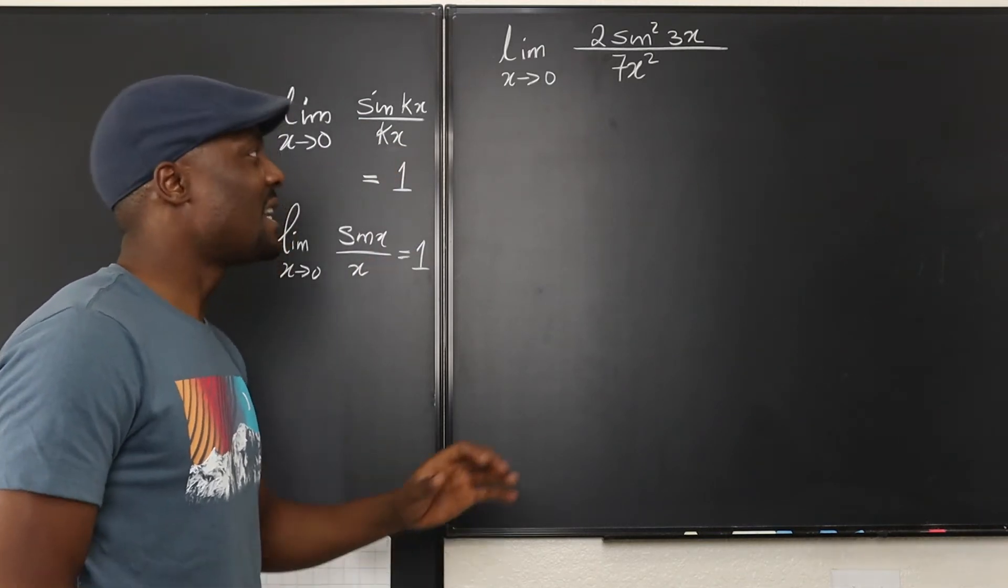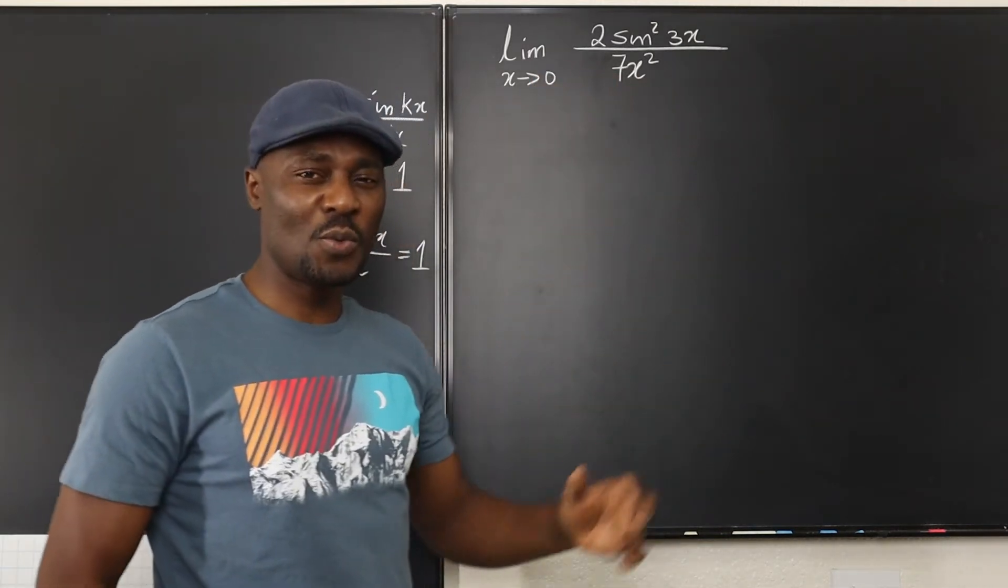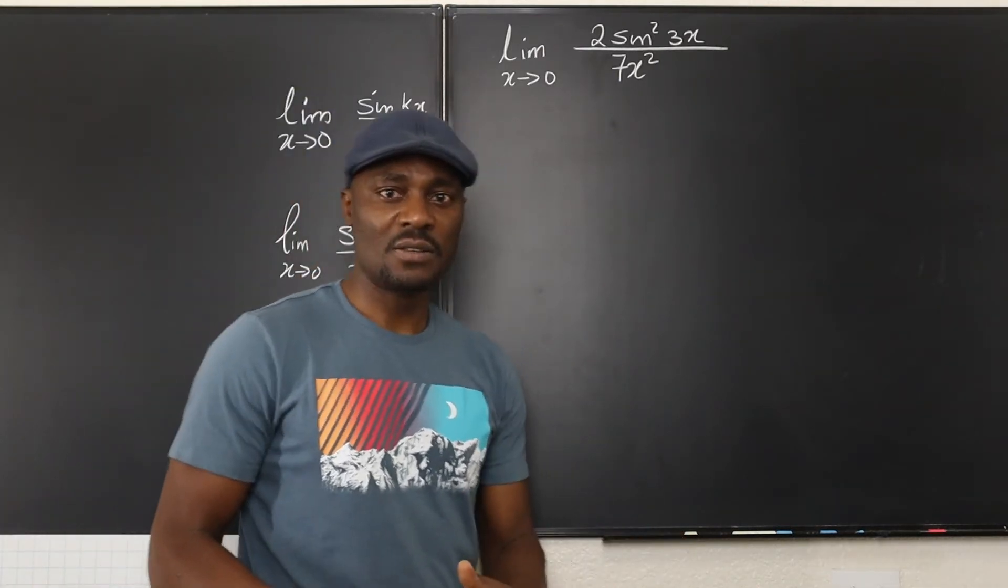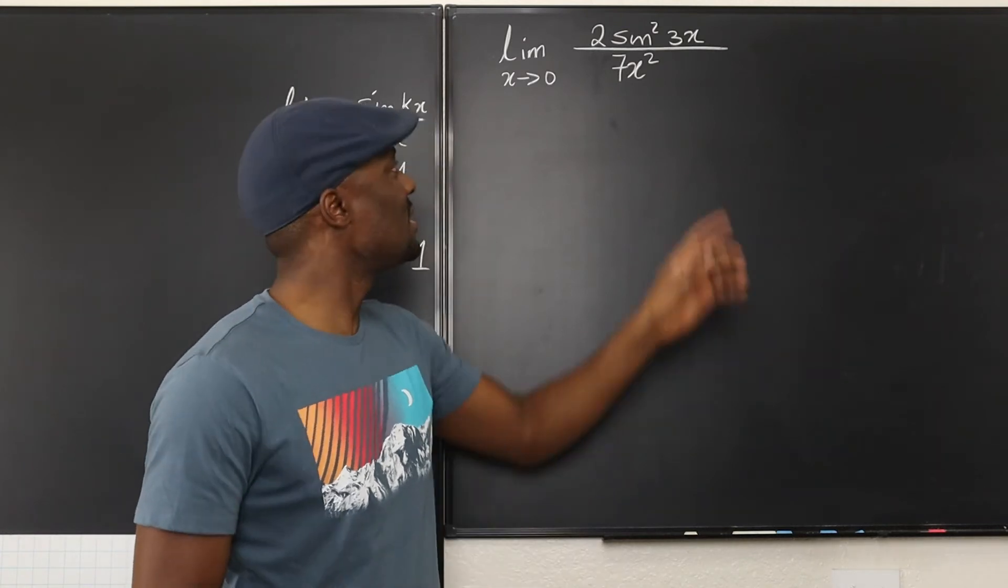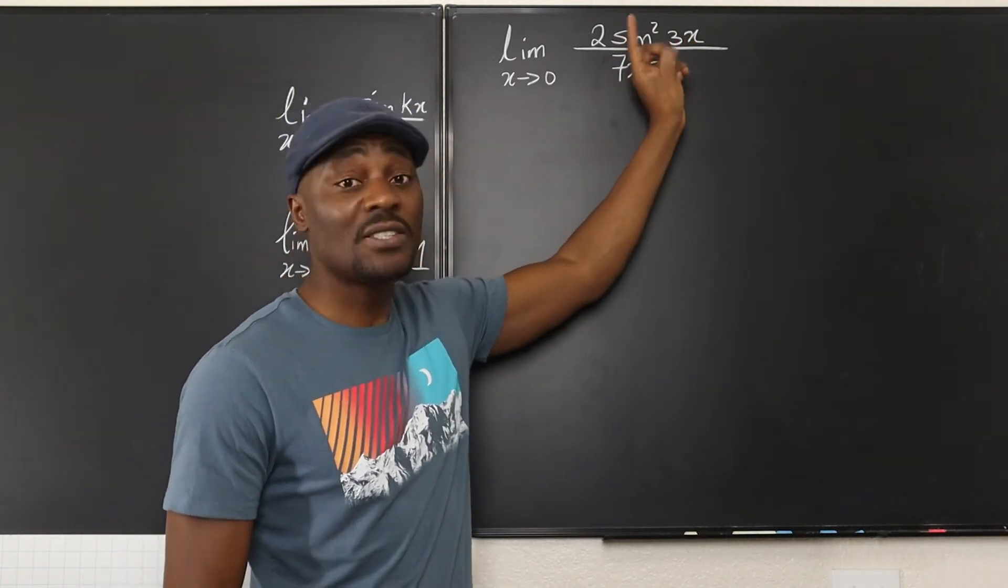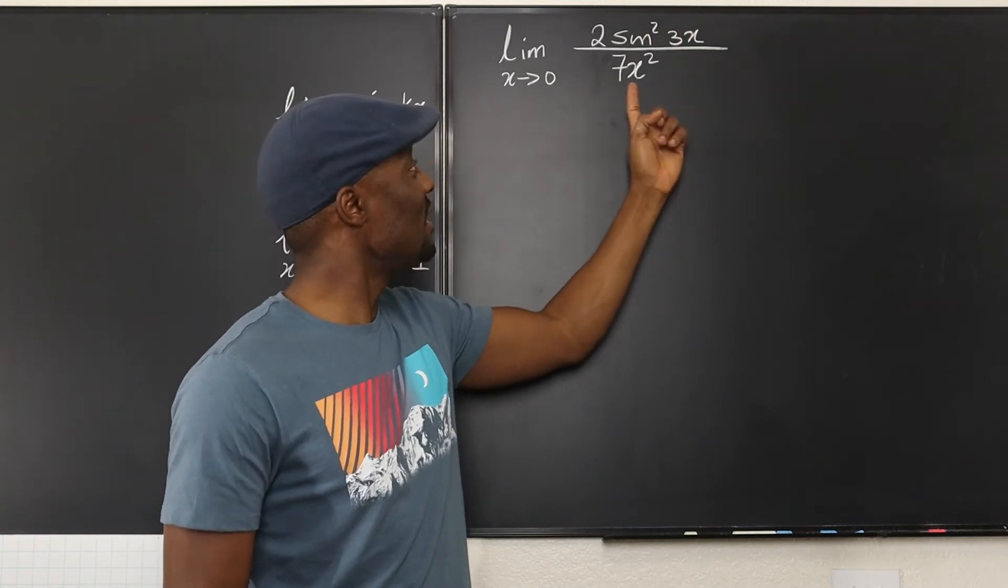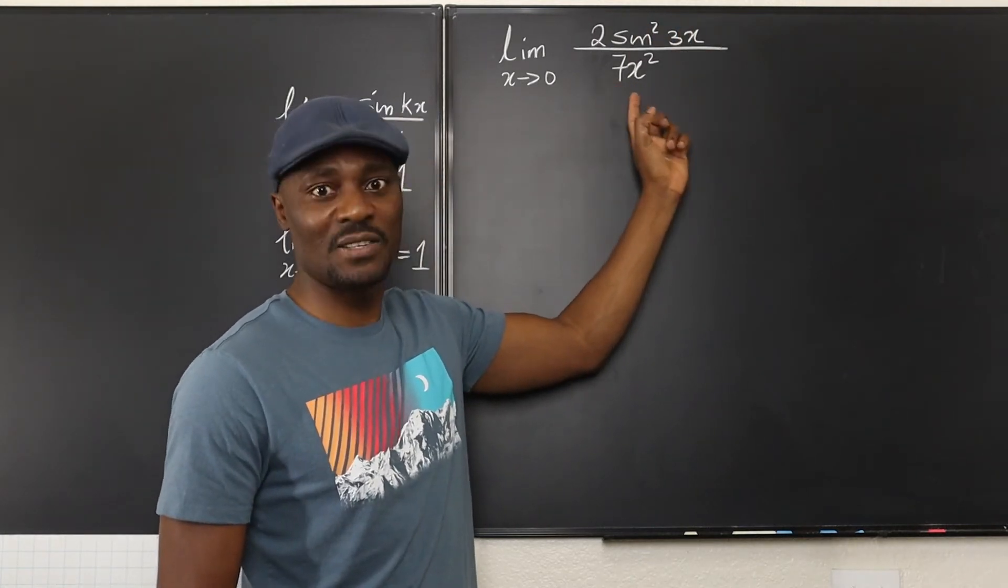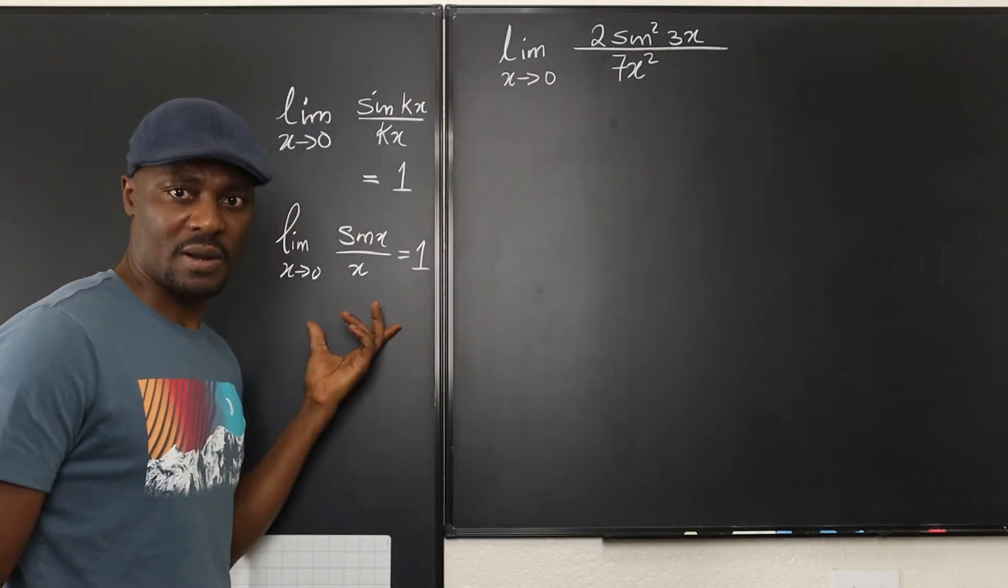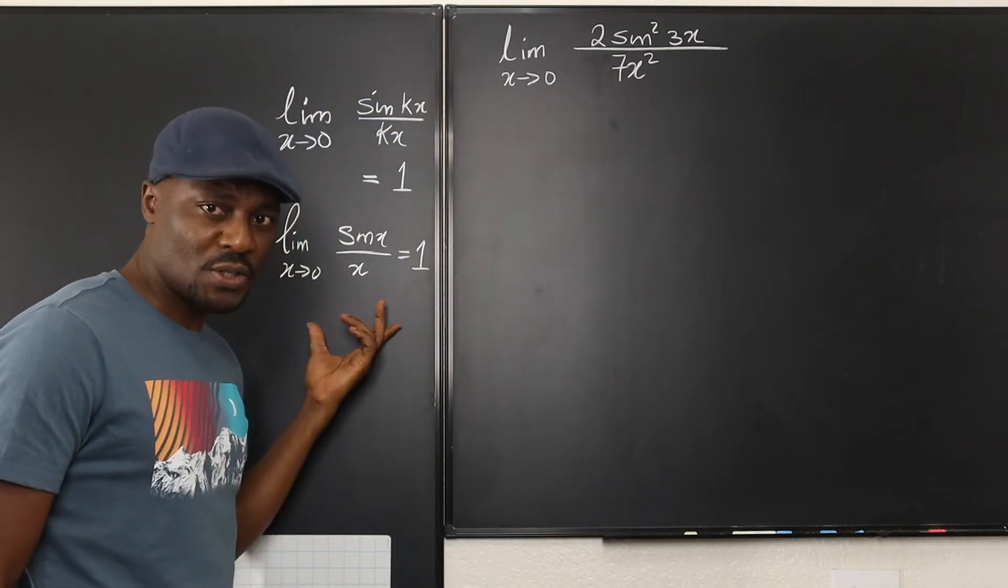So if you remember that every time you see a problem like this, you want to see if you can use that rule. At first glance, you would say no, you can't because this is not sine 3x. It is actually sine squared 3x and this is not 3x or 9x. You can't take the square root of anything. It doesn't look like this is going to work. So what do we do?